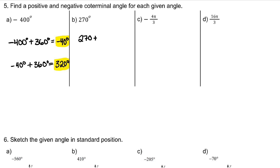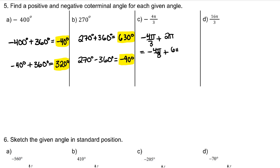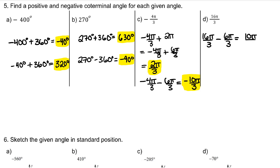Try part B on your own. For part C, add and subtract 2 pi. For part D, this looks like a pretty big angle, so start by subtracting 2 pi because we'll likely get another positive coterminal angle first, and then we'll have to keep subtracting from there. After finding another positive coterminal angle, subtract 2 pi again to get a negative one.